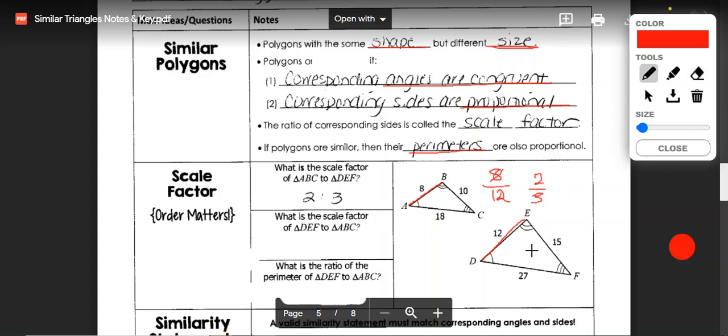The scale factor going the opposite direction from DEF to ABC is going to be 3 to 2. Again, that order matters when you're matching scale factor.